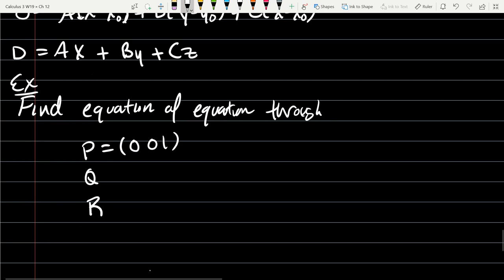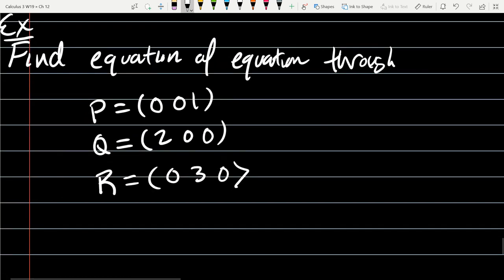So the first point we're going to go through will be 0, 0, 1. Q will be the point 2, 0, 0. R will be the point 0, 3, 0. So we have three points.